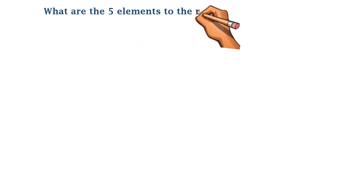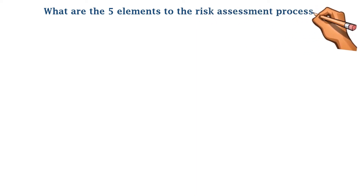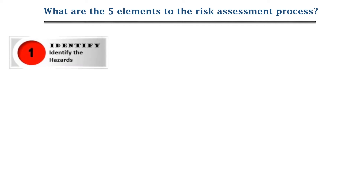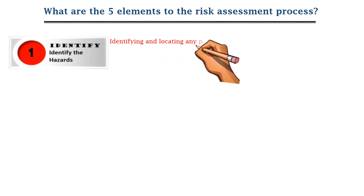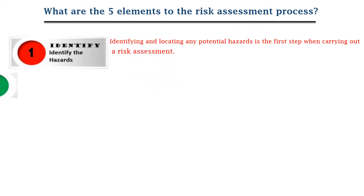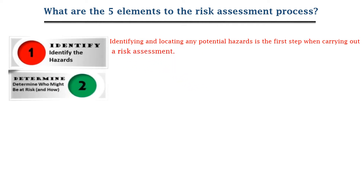What are the five elements of the risk assessment process? We have five elements. The first one is: identify the hazard. Identifying and locating any potential hazard is the first step when you carry out a risk assessment.